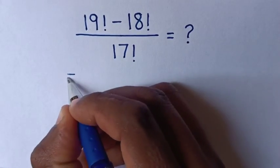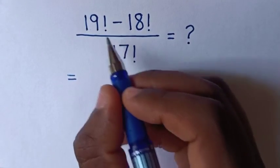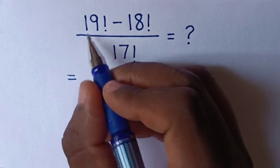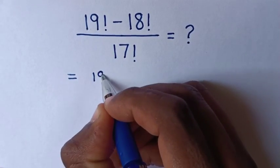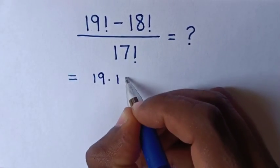So this is equal to, for this 19 factorial to have common 18 factorial, this 19 factorial is same as 19 times 18 factorial.